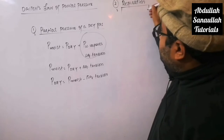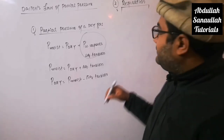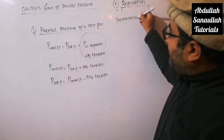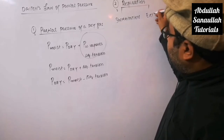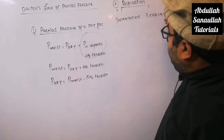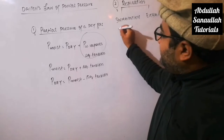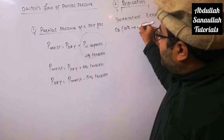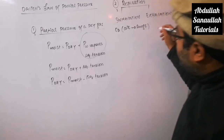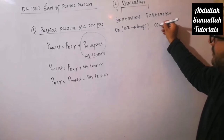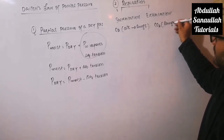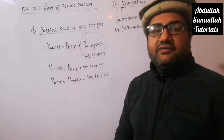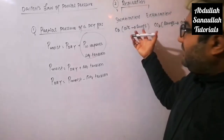Respiration in humans has two phases: one is inhalation or inspiration, and the other is exhalation or expiration. In inhalation, oxygen moves from air to lungs, and in expiration, CO₂ moves from lungs to air. This movement of gases is actually due to the difference in their partial pressure in the two mediums — air and lungs.